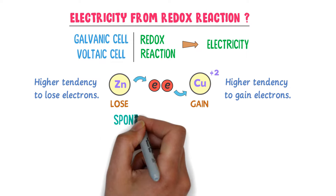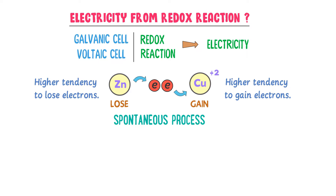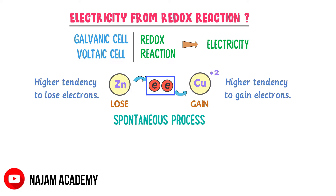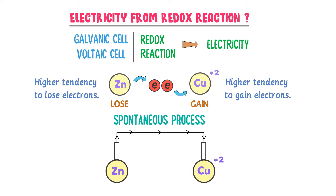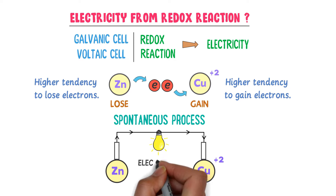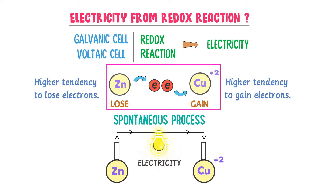This is a natural or spontaneous process which happens on its own. If we utilize the movement of these two electrons, we can generate electricity. For example, we will place zinc and copper far away from each other and connect them by a conducting wire. When electrons start flowing from zinc towards copper, it will produce electricity and the bulb will glow. So using this reaction, we can generate electricity.